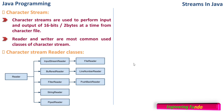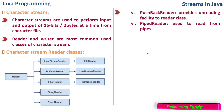The remaining Reader classes are PushbackReader and PipedReader. PushbackReader provides an unreading facility to the Reader class — it allows previously read data to be pushed back into the stream. PipedReader is used to read from pipes.